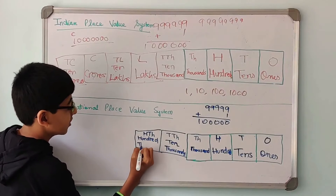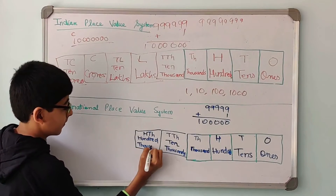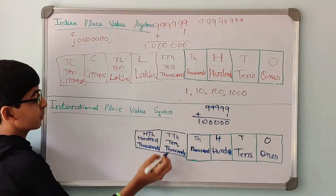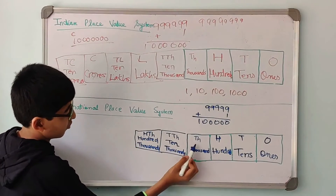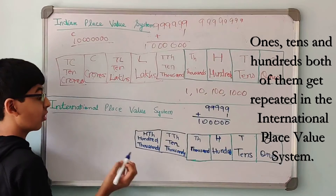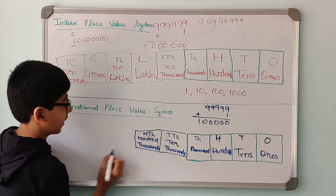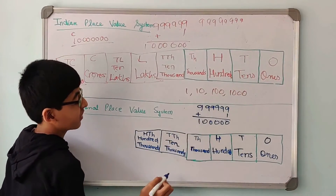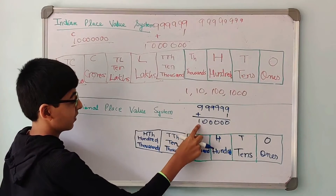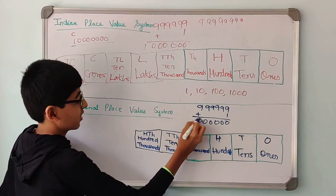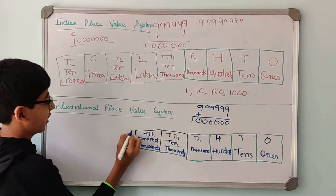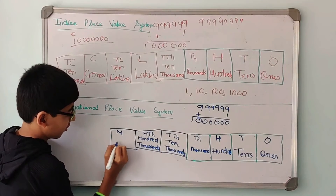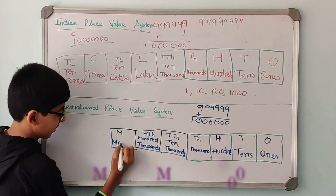Like in the Indian place value system, 1s and 10s are getting repeated. But in the International place value system, 1s, 10s, and 100s — all of them get repeated. Once it is 999,999 and when we add 1 to that, we get 1 followed by 6 zeros. And this number is very important — it is called a million.